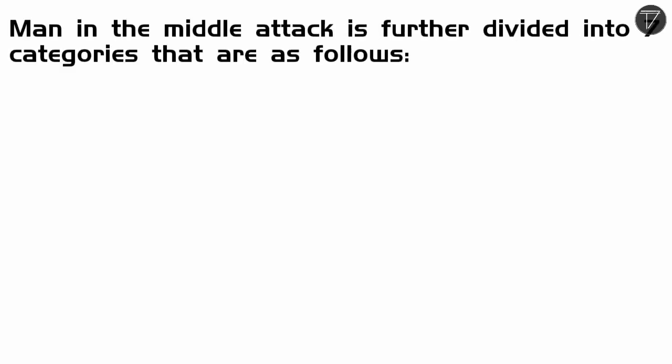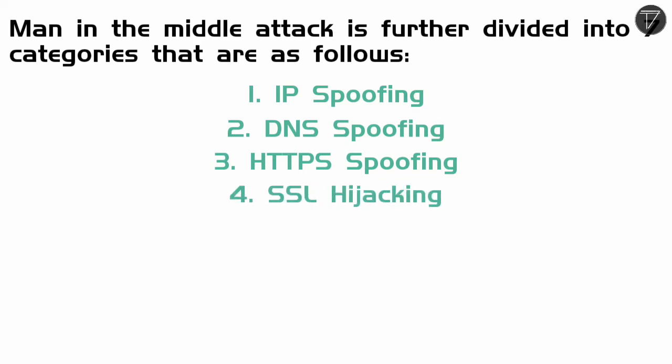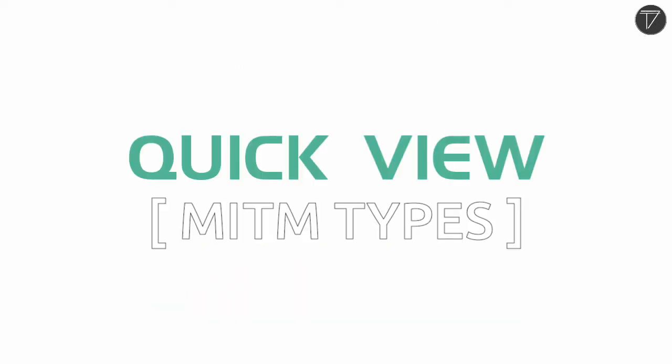Man-in-the-middle attack is further divided into seven categories: number 1, IP spoofing; number 2, DNS spoofing; number 3, HTTPS spoofing; number 4, SSL hijacking; number 5, Wi-Fi eavesdropping; number 6, email hijacking; and number 7, stealing browser cookies. Let's have a quick view on these types of man-in-the-middle attacks.